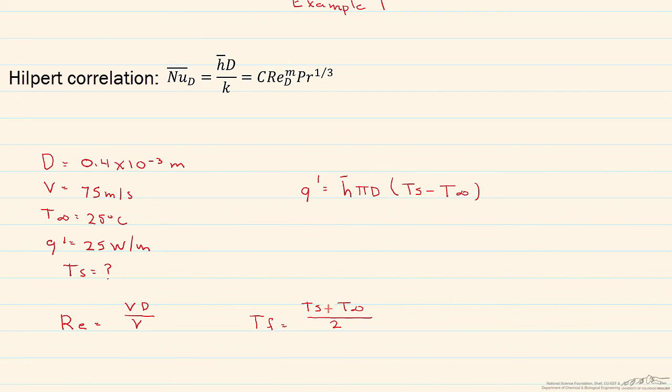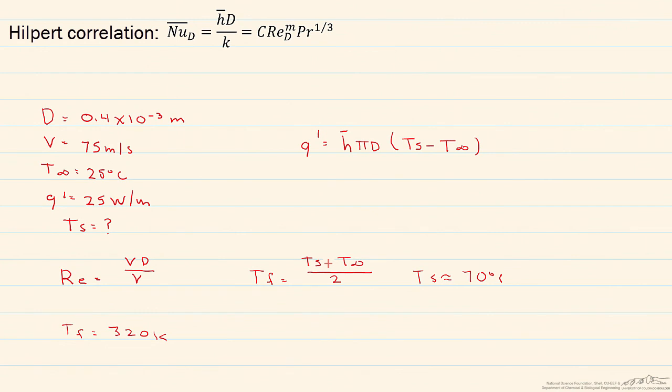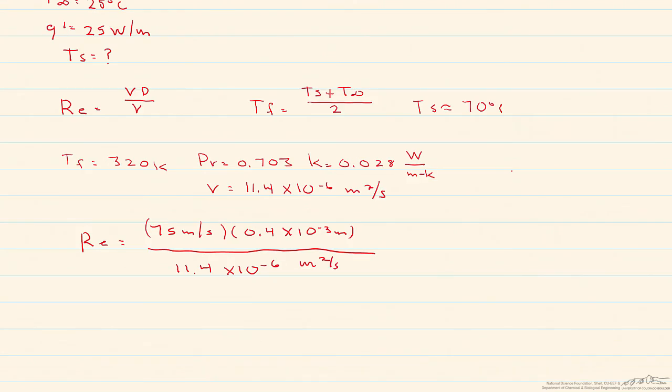so let's make a guess at it. And I'm going to guess that this surface temperature is equal to about 70 degrees C. And so what that means is that we look up our properties at 320 Kelvin. And if we do that, what we find is, so let's put those numbers into our Reynolds number, find our constants, C and M, and then calculate the Nusselt number. And that gives us a Reynolds number of 2632,